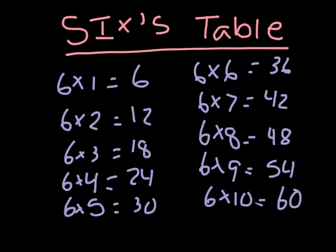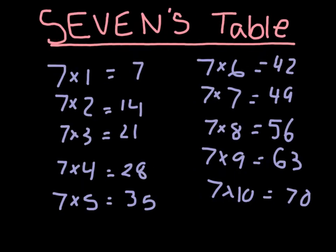Now let's go on to our sevens table. It goes: 7 times 1 is equal to 7, 7 times 2 is equal to 14, 7 times 3 is equal to 21, 7 times 4 is equal to 28, 7 times 5 is equal to 35, 7 times 6 is equal to 42, 7 times 7 is equal to 49, 7 times 8 is equal to 54, 7 times 9 is equal to 63, and 7 times 10 is equal to 70.